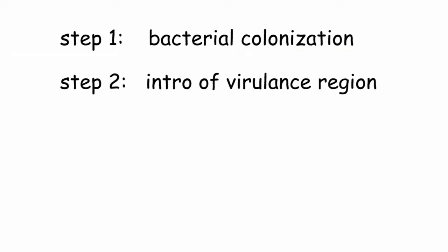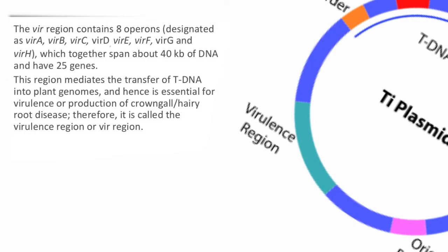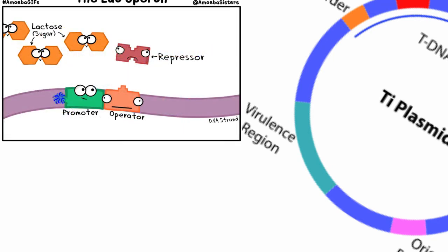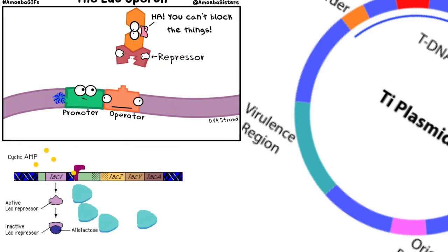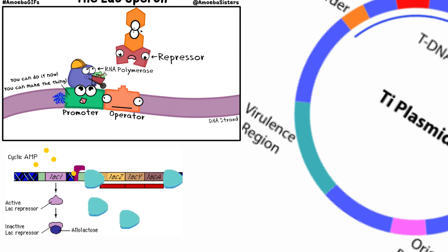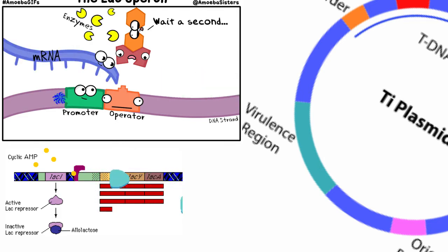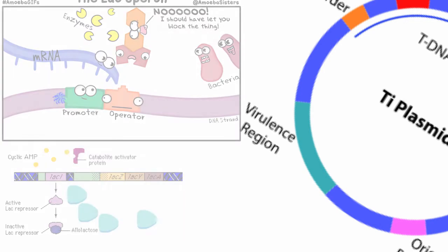Step 2 - Introduction of the virulence region: The virulence region is about 30 to 40 kb and works as a regulon. This region is divided into eight operons: vir A, B, C, D, E, F, G, H. Vir A, F, and G are monocistronic while vir B, C, D, E, and H are polycistronic. An operon is one or more genes transcribed into a single RNA molecule under the control of a single regulatory site, while a regulon is more than one operon under the control of a single regulatory protein.